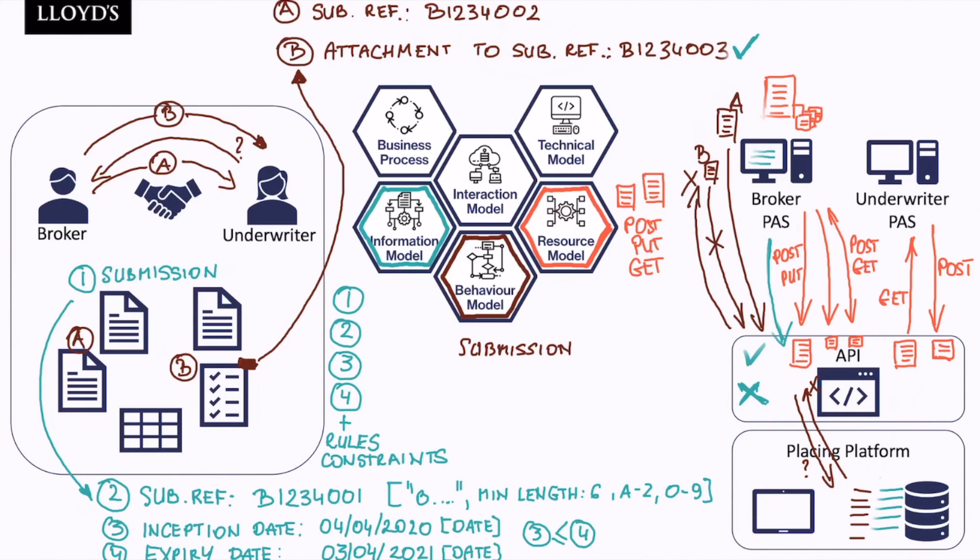So in essence, the behavior model provides us with constraints and rules which ensure consistency across end-to-end business process and how it is reflected in underlying database records.